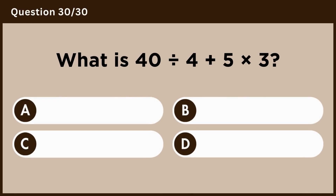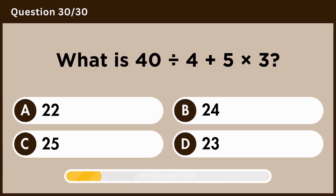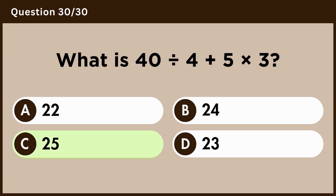What is 40 divided by 4 plus 5 times 3? Answer C, 25.